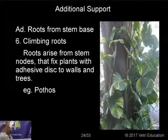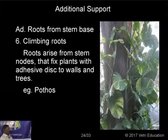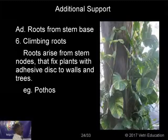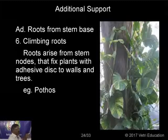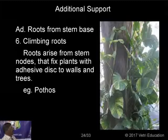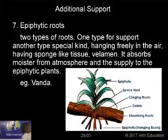Another example of adventitious roots from the stem is climbing roots, found in plants like pothos and pepper. Additional adventitious roots develop from the nodes and help the plant climb. The roots arise from the stem nodes and fix the plant to walls and trees using adhesive discs. At the end of these additional roots, there is a disc-like structure that fixes onto a wall or another plant for climbing purposes. These are called climbing roots.